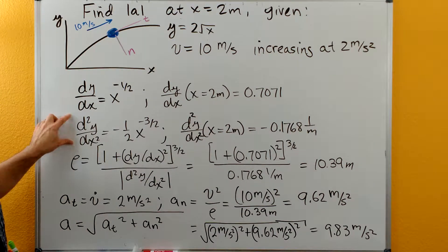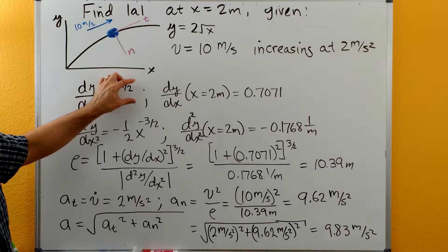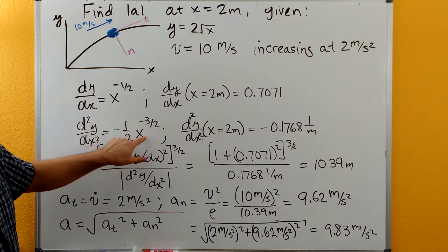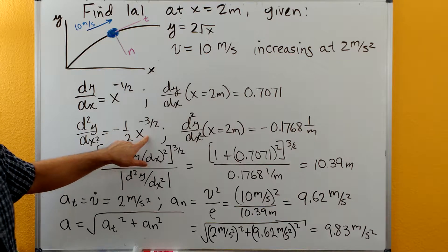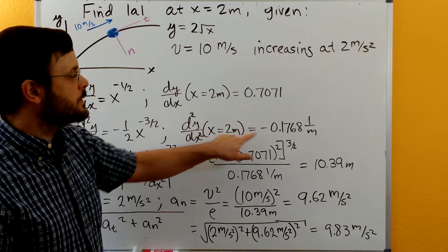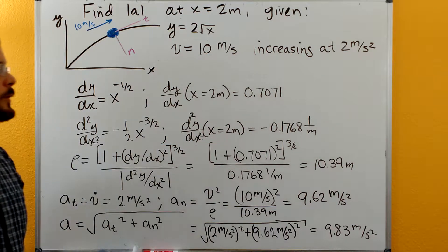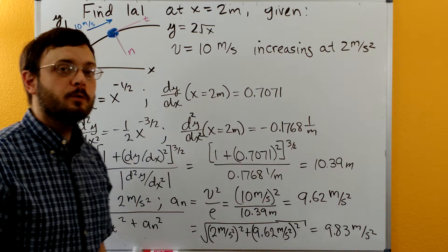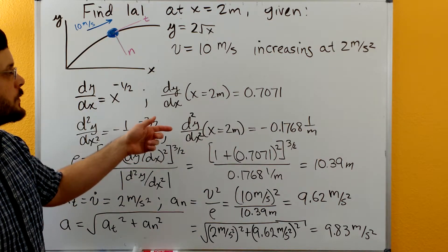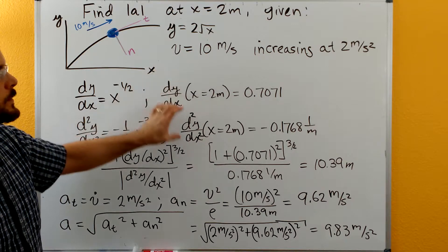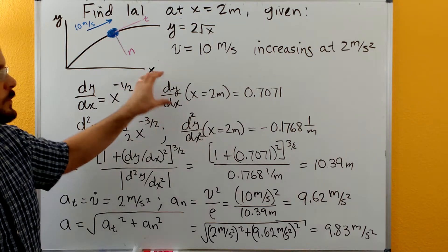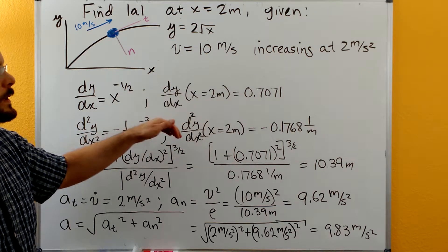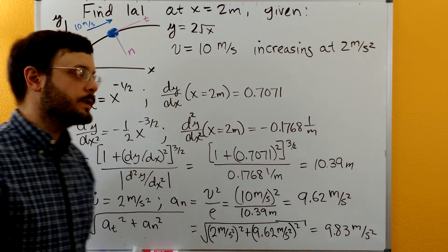Doing our second derivative, we'll take the negative one-half and move it out in front, and then we'll have x to the negative three-halves. We'll plug in x is equal to two meters and get negative 0.1768, and then our units now are going to be one over meters. We're taking a derivative of this with respect to x. So in effect, we're dividing this by another length unit, so one over the length unit there.